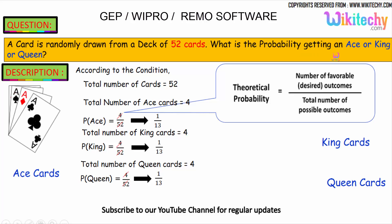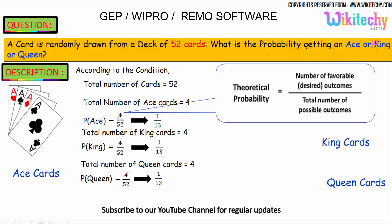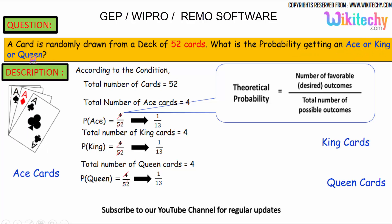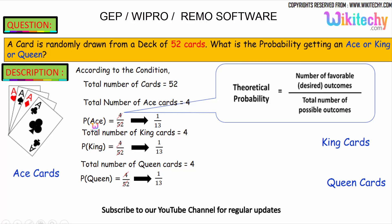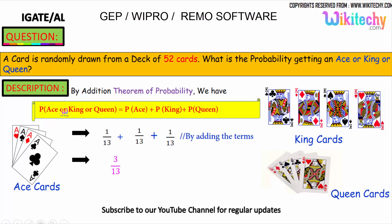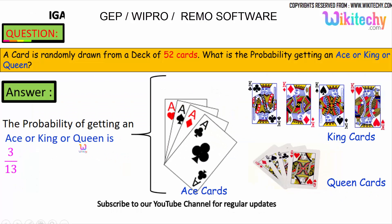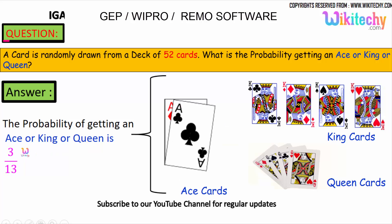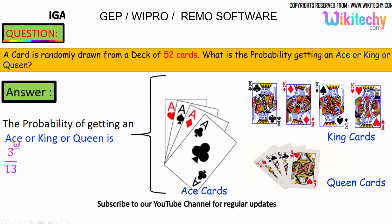The question is the probability of getting an ace or king or queen. We need to add these: probability of ace plus probability of king plus probability of queen = 1/13 + 1/13 + 1/13 = 3/13. The final answer is, the probability of getting an ace or a king or a queen is 3/13.